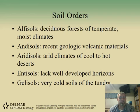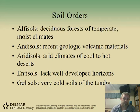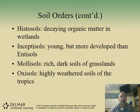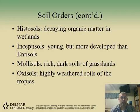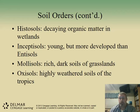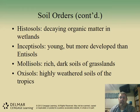Entisols lack well-developed horizons, and Gelisols are very cold soils of the tundra. Histosols are soils that contain a lot of decaying organic matter — found in swamplands and wetlands, these tend to be darker and have a distinct smell. Inceptisols are young but more developed than Entisols. When soils haven't had time to age and develop the different A, E, O, C, and B layers, they're considered young soils.